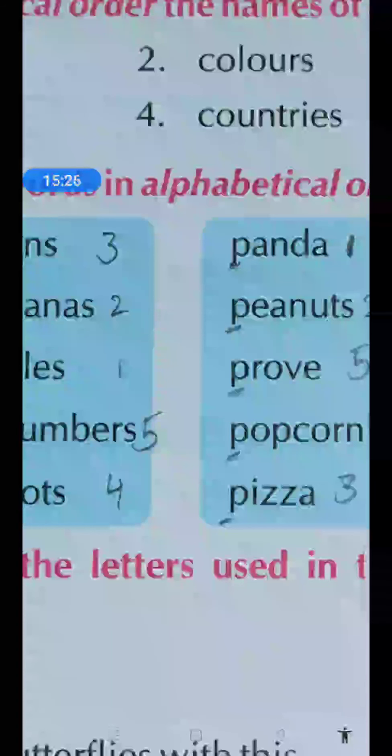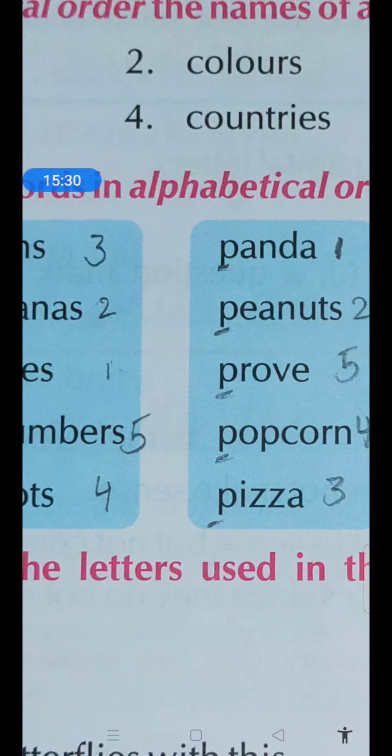A, E, R, O, I. So, A first - panda. P-A-N-D-A. Panda we will write. Then after B, C, D comes E - yes, peanuts.